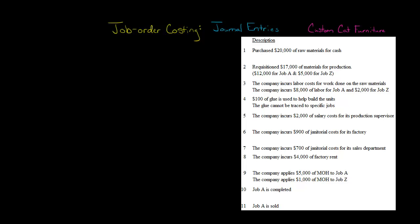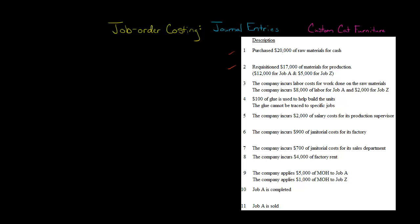In this video, I'm going to walk you through the journal entries to record the flow of costs for a manufacturer that uses job order costing. Our manufacturer is a company called Custom Cap Furniture, and we have the following transactions that occurred. We need to journalize them, so let's go one by one and record journal entries.